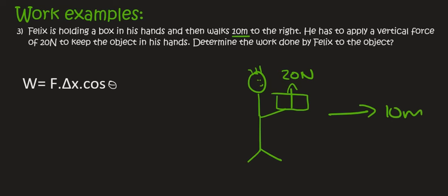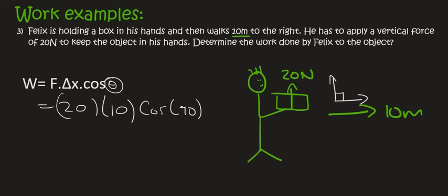Felix is applying a force of 20 Newtons upwards, obviously because he has to keep the box from falling. He then walks 10 meters to the right. We need to determine the work done by Felix. Work is equal to force times displacement times cosθ. The force he's applying is 20 Newtons. The distance he's going to walk is 10 meters. Now we need to look at the angle. He's going in this direction, but the force is in that direction. So that's a 90 degree angle. And cos(90) is zero. So the work done by Felix is zero.